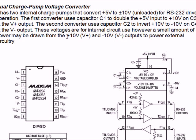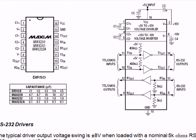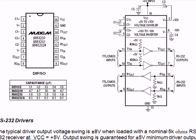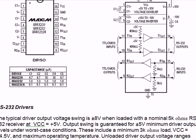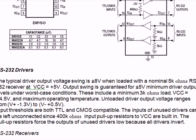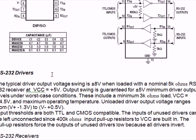These voltages are for internal circuit use; however, a small amount of power may be drawn from the plus and minus 10 volt outputs to power external circuitry, but in our case we are not using that. Looking at the block diagram, we discussed the voltage doubler: plus 10 volts, minus 10 volts from 5 volts, and then we come to the RS-232 driver.